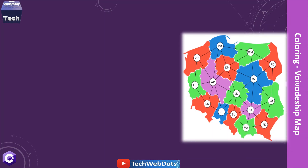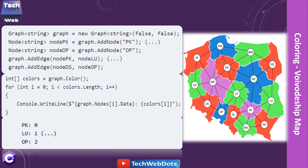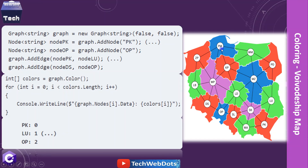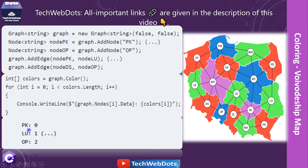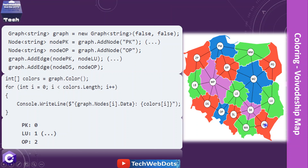You may notice the output looks a little different from what I explained — for that you can go through my code using the repository link in the description. You can modify the code: instead of node names one through eight, add nodes like PK, OP, PM, ZP, LB and then add the edges wherever required. Call the same color method — no change to its definition is needed — and the output will show, for example, PK uses color 0, LU uses color 1, OP uses color 2.